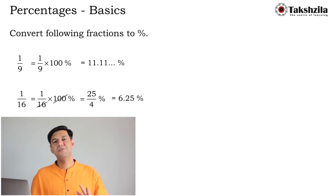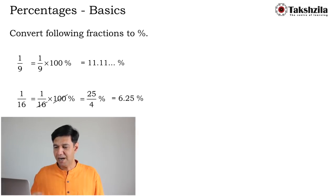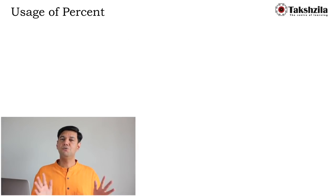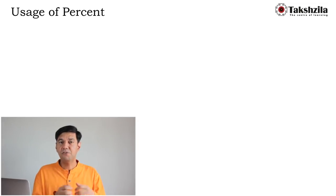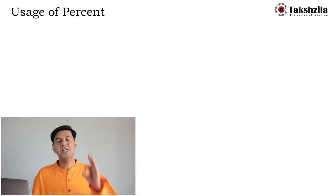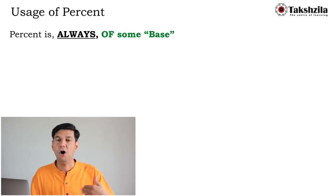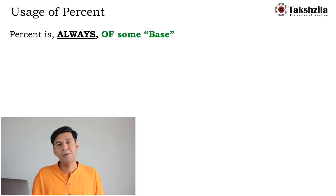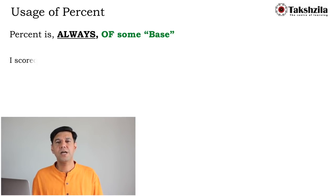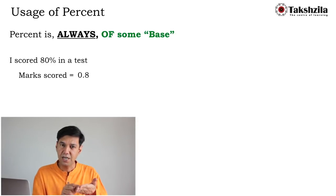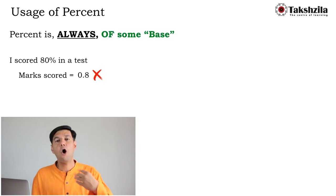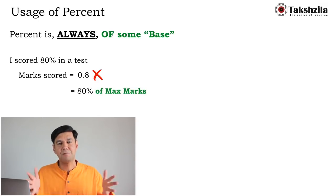Before we close, let's understand a basic but important concept of percentage usage. A percentage is always of some value — there is no exception. It always has a base. For example, if I scored 80% marks in a test, that does not mean my marks are 0.8. It means 80% of the maximum marks — so my score is 0.8 times the maximum marks.